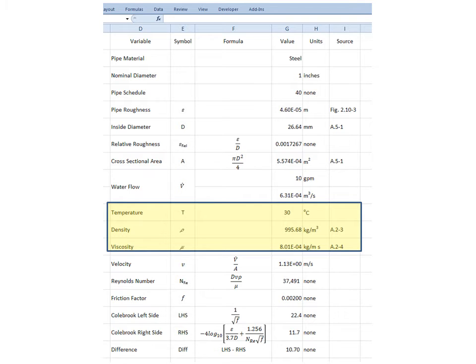Our temperature is 30 degrees Celsius, and we can look up the density of water at 30, and that's 995.68 kilograms per cubic meter, and the viscosity is 8.01 times 10 to the minus 4 kilograms per meter second, and these are given in appendix A.2-3 and 2-4.